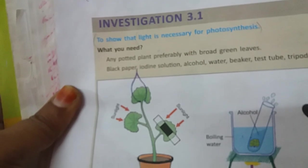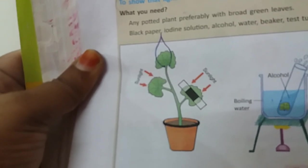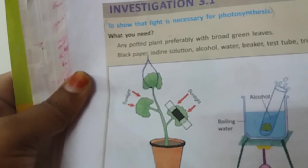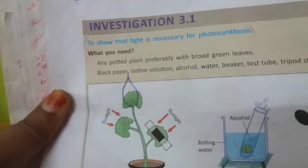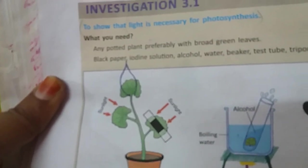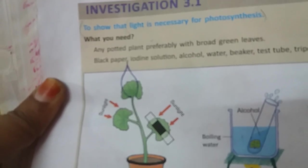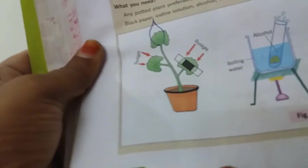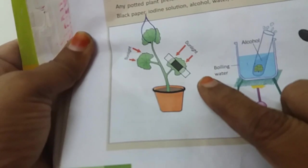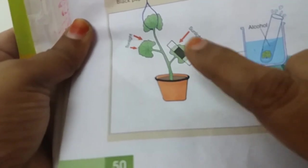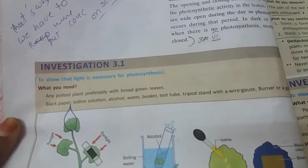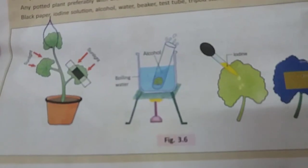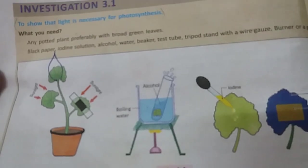Place the pot in sunlight for at least 5 or 6 hours. Then pluck the experimental leaf from the potted plant and remove the black paper. Boil the leaf in a beaker containing water using Bunsen burner for heat supply. Take out the leaf and keep in a test tube containing alcohol solution. Boil the test tube in water for one or two minutes. Don't heat the alcohol directly — it may catch flame and is very dangerous.